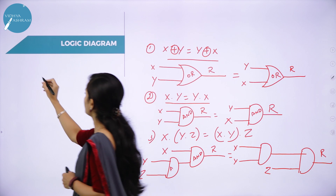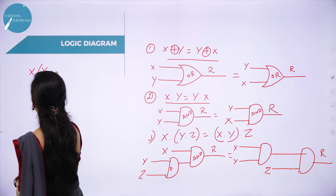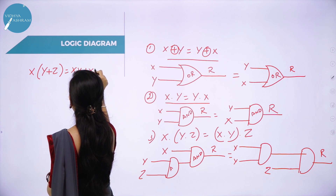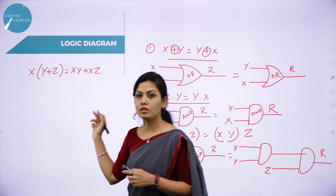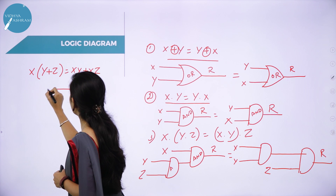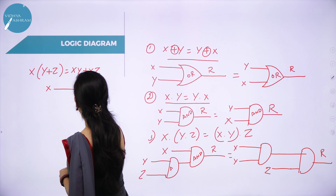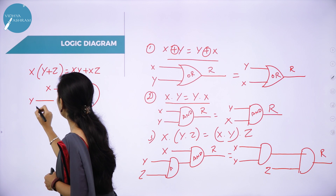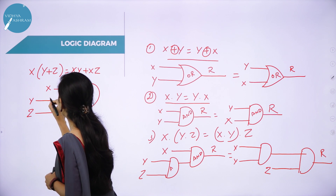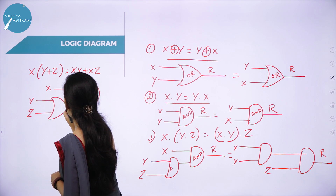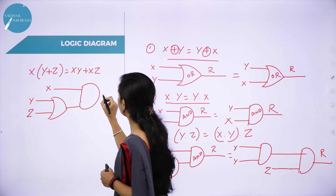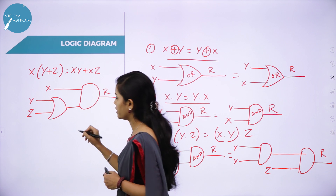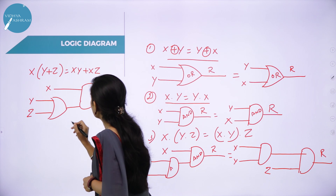The next expression is x(y + z) = xy + xz. To write the logic diagram: x is ANDed with (y + z), where y and z first go through an OR operator. The output equals xy + xz.